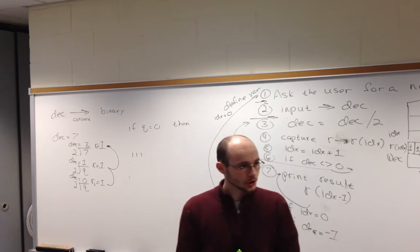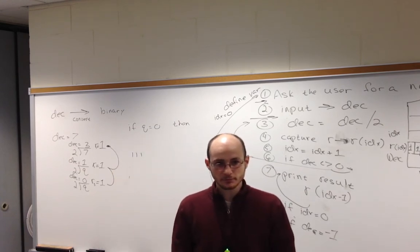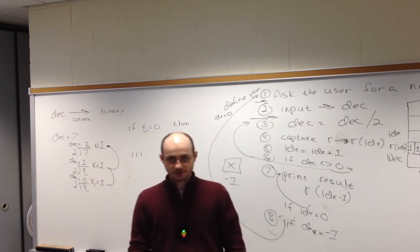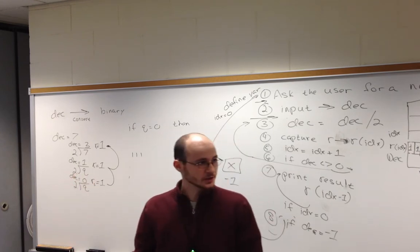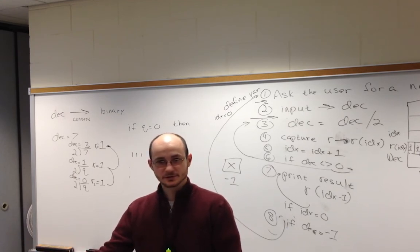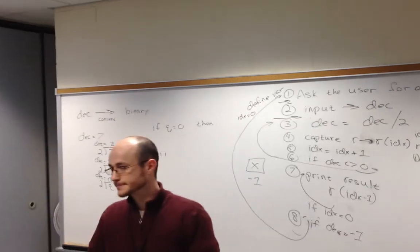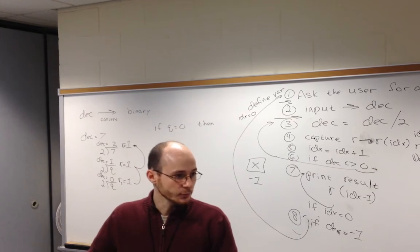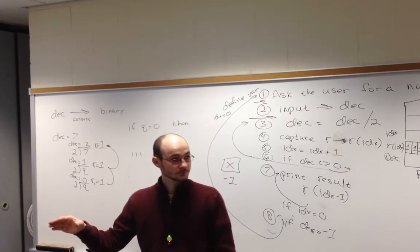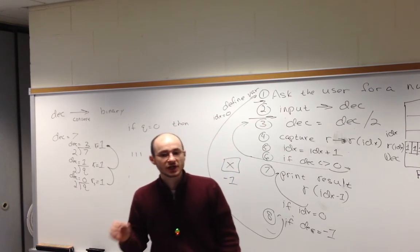The CPU knows that binary code represents division because your compiler knows what the processor is — it converts what we did into the language that processor understands. This is why when you go shopping for software, it'll say system requirements must run on an Intel processor and will not work on an Apple computer, because all processors require different instruction sets.